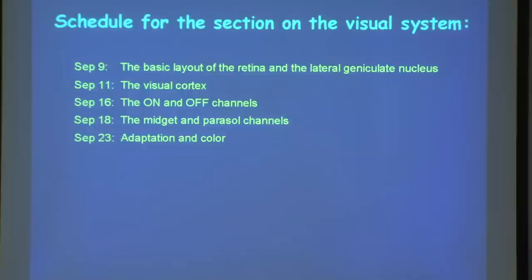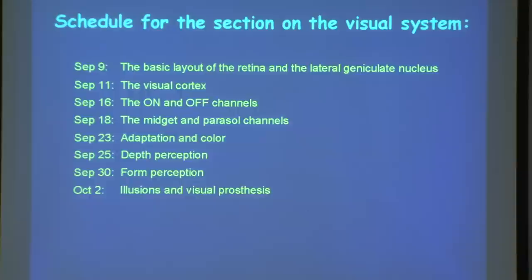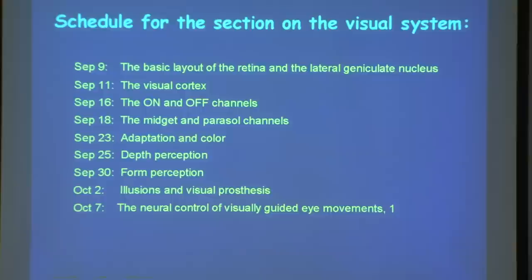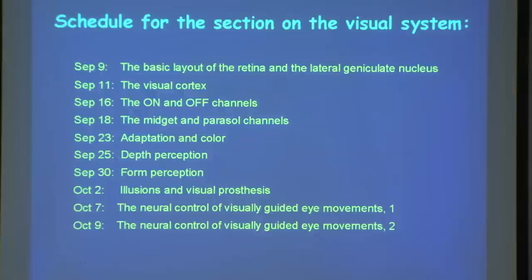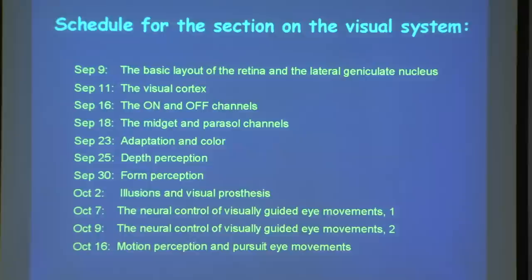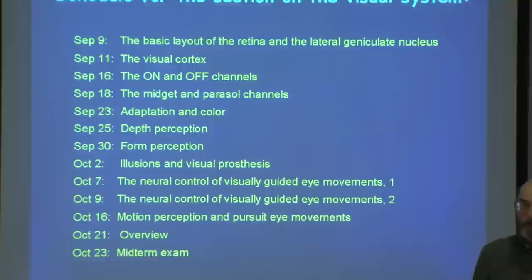Then we're going to talk about adaptation and color, depth perception, and form perception. On October 2 we'll look at illusions and visual prosthesis. Then we'll cover the neural control of visually guided eye movements in two sessions, motion perception, smooth pursuit eye movements, and an overview. Finally, on October 23, we'll have the midterm exam covering questions from all of these lectures.